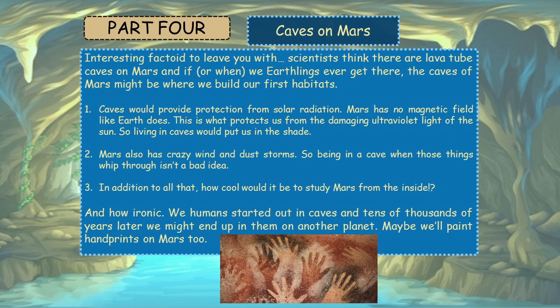Scientists think there are lava tube caves on Mars, and if or when we Earthlings ever get there, the caves of Mars might be where we build our first habitats — for three reasons. First, caves would provide protection from solar radiation, as Mars has no magnetic field like Earth does, which is what protects us from the damaging ultraviolet light of the Sun. Second, Mars also has crazy wind and dust storms, so being in a cave when those things whip through isn't a bad idea. Third, how cool would it be to study Mars from the inside? And how ironic — we humans started out in caves, and tens of thousands of years later, we might end up in them on another planet. Maybe we'll paint handprints on Mars, too.